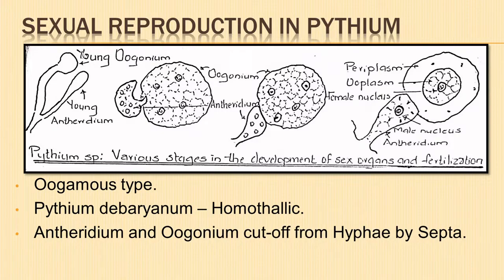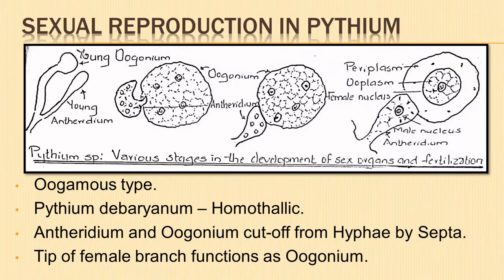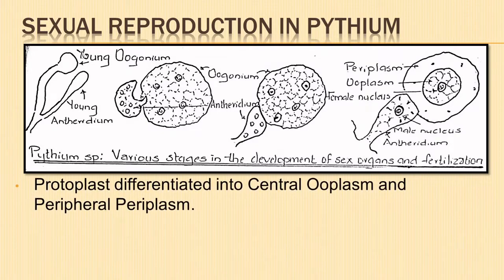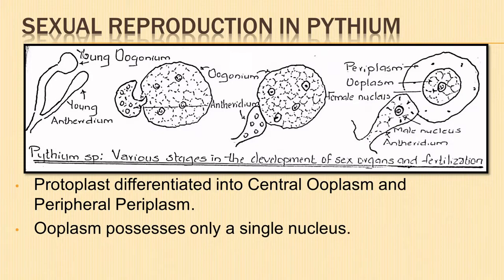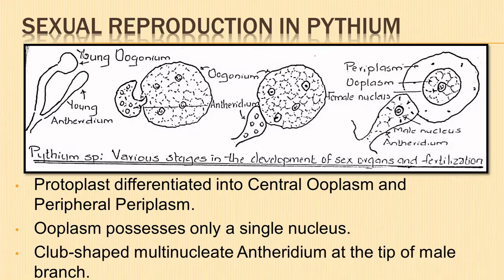Both sex organs are cut off from the hyphae by the formation of septa. The tip of the female branch swells and gets filled with nuclei and cytoplasm, functioning as a young oogonium. The protoplast of the oogonium differentiates into a large central glandular denser part called the ooplasm, and a peripheral thin spongy portion containing a layer of cytoplasm called the periplasm. All nuclei except one migrate to the periplasm, so the ooplasm possesses only a single nucleus.